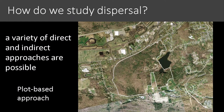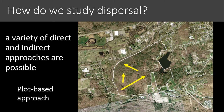As we think about dispersal, let's also think about how we study it. There are a variety of both direct and indirect approaches. The most common direct approach is a plot-based approach, where we define a plot like the one on the right outlined in white. Within that plot, we mark some animals — we catch them, mark them, release them, and then at some later time, presumably after they've dispersed, we re-catch them and estimate the distance those animals have dispersed.